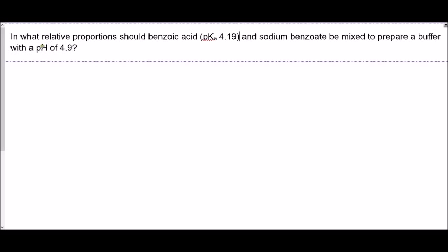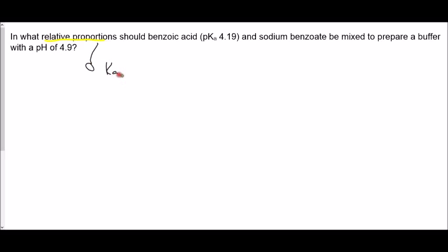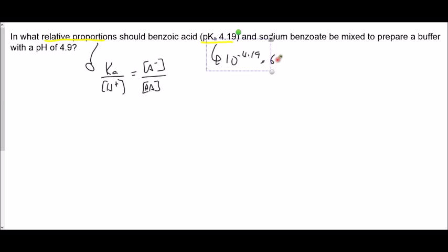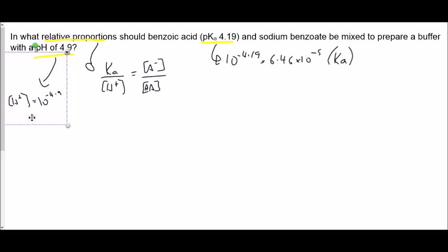We've got a buffer question that mentions relative proportions. Pause the video now and have a go at this question. Relative proportions should direct us to the Ka expression rearranged to give us the ratio of salt to acid. We've got a pKa value, so we're going to convert that into Ka by doing 10 to the minus 4.19. So there we've got our Ka value. And then it says about preparing a buffer solution with a pH of 4.9, so we can get H⁺ by doing 10 to the minus 4.9.